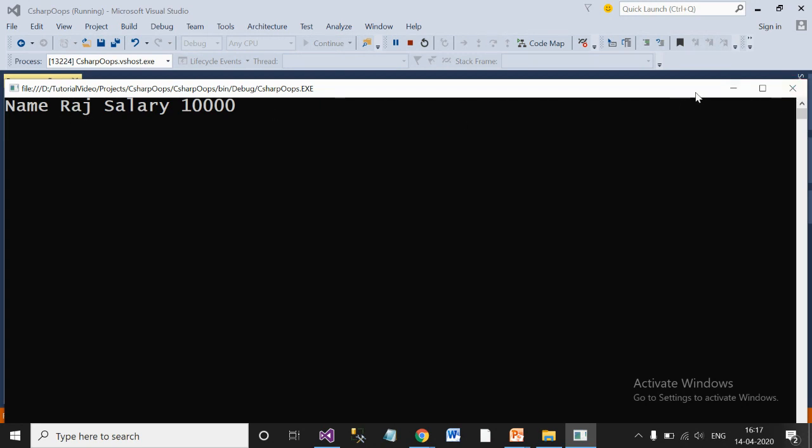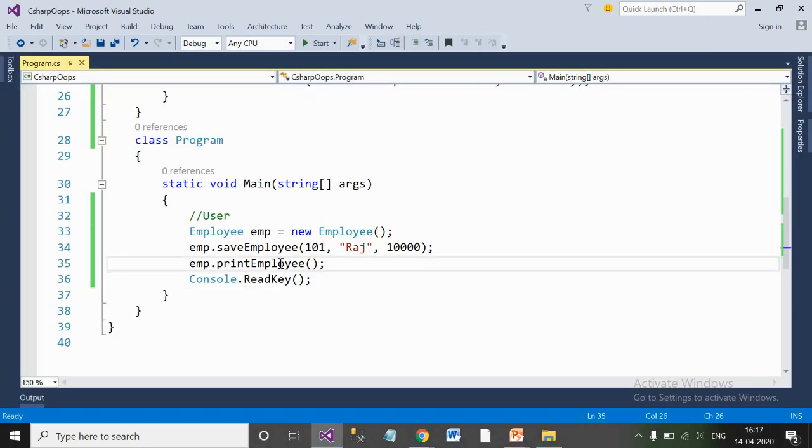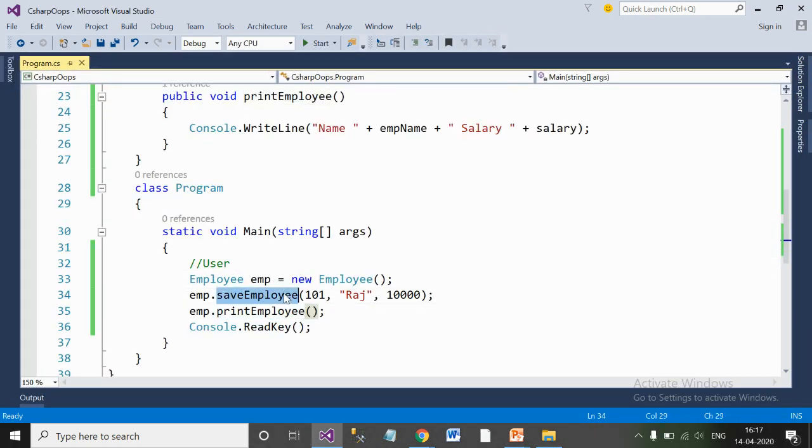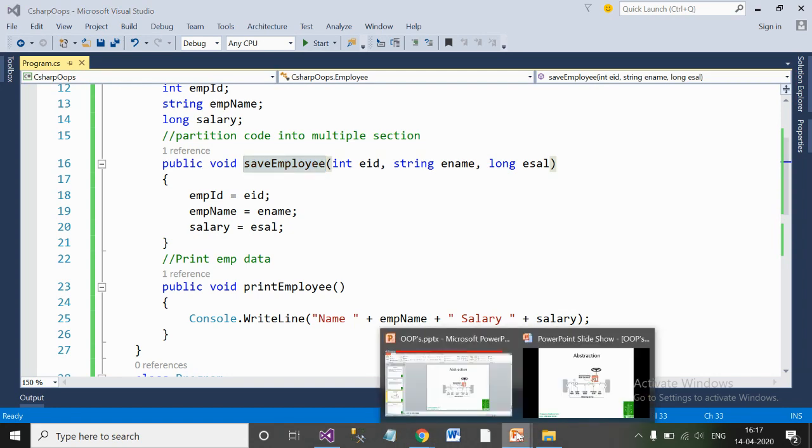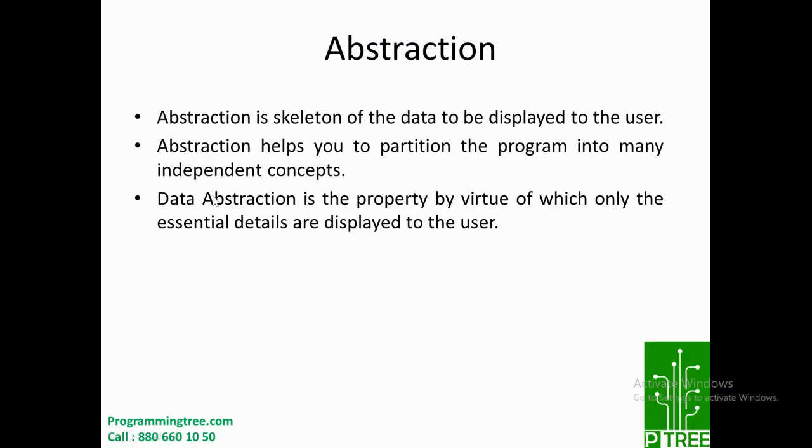As a user, I got the data, but I need not think about what are the internal implementations inside this particular function. That is what the particular definition is saying: data abstraction is the property by virtue of which only the essential details are displayed to the user. Like save employee function and number of parameters—what is happening inside is not the part or concern of a user.